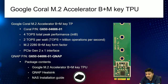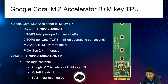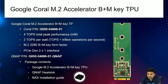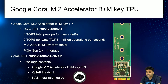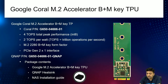Other specifications: it's an M2 2280 B+M key form factor. This M2 accelerator B+M key is available in the market and is compatible with QNAP NAS. You can also purchase this TPU from the QNAP website. When you purchase from QNAP, you get three things: the TPU itself, the QNAP heat sink to control temperature, and the NAS installation guide — all as a package.